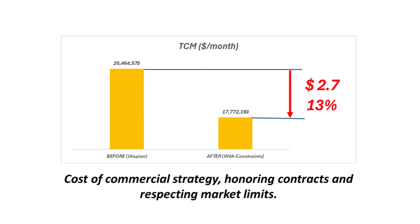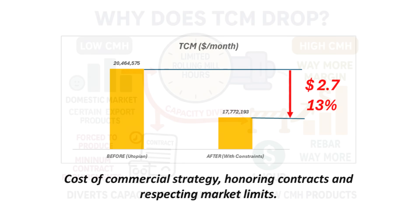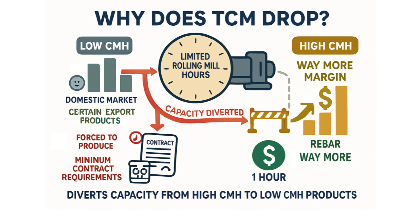So that 13%, that $2.7 million a month, is basically the cost of their commercial strategy — the cost of honoring contracts and respecting market limits. This methodology quantifies it: it puts a hard number on the financial impact of those constraints. The company is forced to allocate precious machine hours to products with low CMH — like that bar domestic market or certain export products — to meet minimum contract levels, even though making rebar during that same hour would generate far more margin.